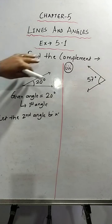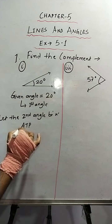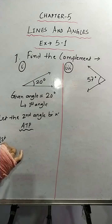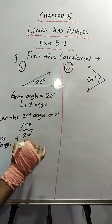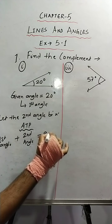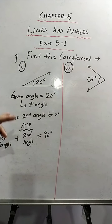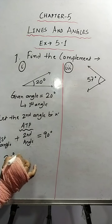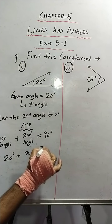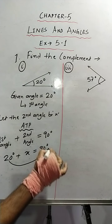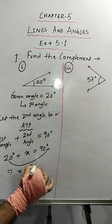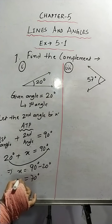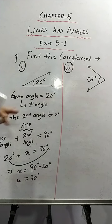As the word complement is written, according to the problem we write: first angle plus second angle equals 90 degrees, because these are complementary angles. The first angle is 20 degrees and the second angle is x. So 20 plus x equals 90. Transposing 20 to the right-hand side, x equals 90 minus 20, which is 70 degrees. So the complement of 20 degrees is 70 degrees.